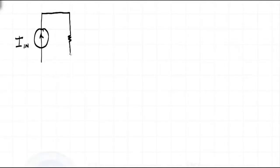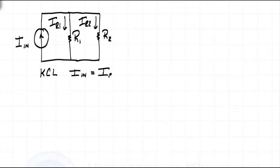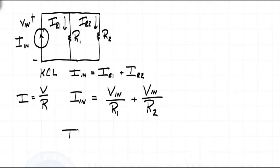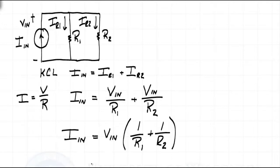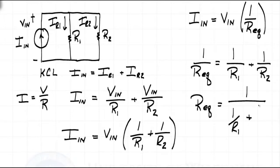Let's start with two resistors in parallel with a current source. We'll label them R1 and R2, then define the current through each of them as IR1 and IR2. By KCL, the input current must equal the sum of the currents through each of the resistors. Since there are only two nodes in this circuit, there is only one voltage — let's call it VN. Using Ohm's Law (current equals voltage over resistance), the input current equals VN divided by R1 plus VN divided by R2. Factoring out VN, we get the input current equals VN times the quantity 1 over R1 plus 1 over R2, so 1 over R_equivalent equals 1 over R1 plus 1 over R2, and R_equivalent equals 1 over (1/R1 plus 1/R2).